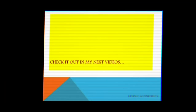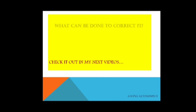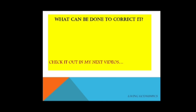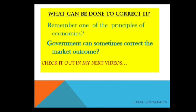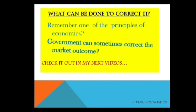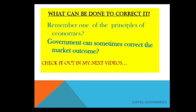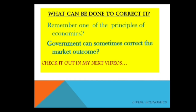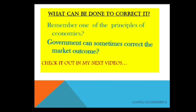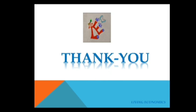In our next video we will see how we can correct this market failure — what can be done to fix it. One of the principles of economics says that government can sometimes correct market outcomes when markets fail to project efficiency on their own. We will see what government can do to reduce output from 25 to 20 gallons and achieve the socially optimal level where marginal social benefit equals marginal social cost. I hope you liked this presentation. Stay tuned for more — thanks for watching, take care, bye.